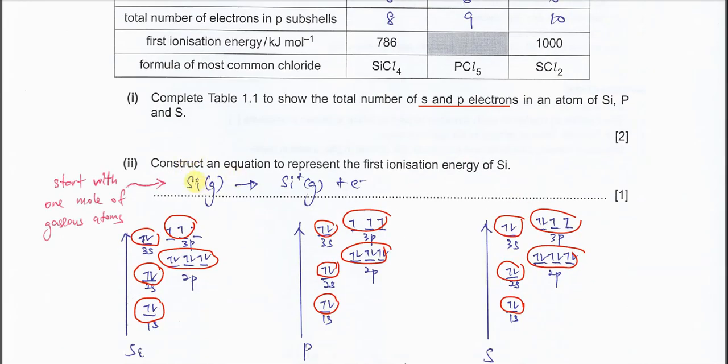Part 2. Construct an equation to represent the first ionization energy for silicon. For ionization energy, it must start from one mole of gaseous atoms. It's always in gaseous form. Because it's first IE, it just needs to release one electron and forms Si+. This one also needs to be gaseous form, gaseous ion.